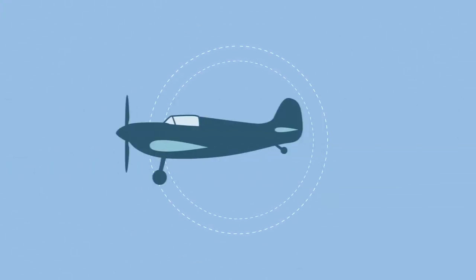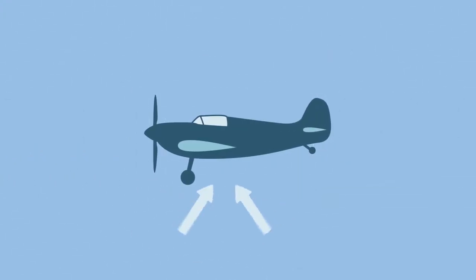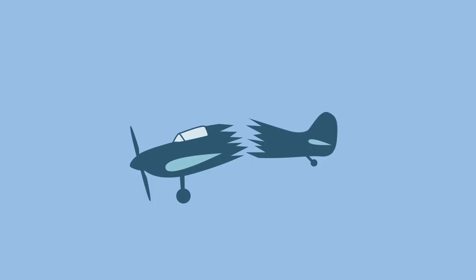It checked all of its planes back from combat and found that the bullet holes were under the wings. So, it decided to reinforce the armor plating on that area of the planes. Unfortunately, this had no effect. Why?